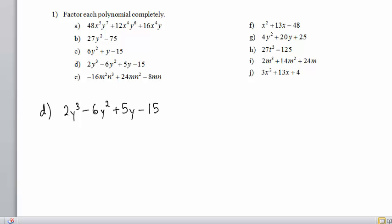In part D, we see four terms. That makes us suspect that factoring by grouping might be a strategy to use. The greatest common factor for the first two terms is 2y squared. That would multiply by y minus 3 to give the first two terms. If factoring by grouping is going to work, this y minus 3 will be repeated.